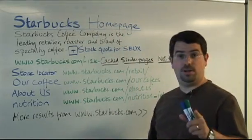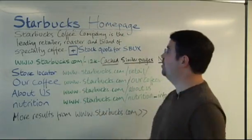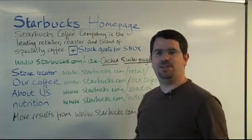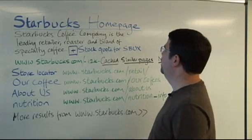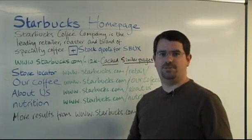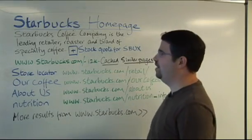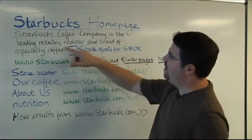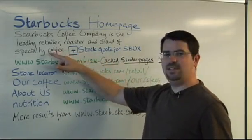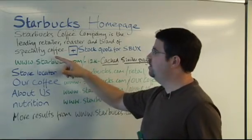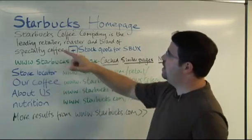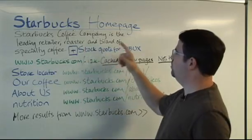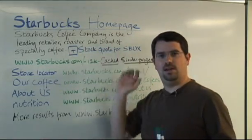Just a quick bit of SEO advice for Starbucks — 'homepage,' a few people might search for that. But I might say something like 'Starbucks coffee' because people are a little more likely to search for that. Anyway, enough of the free advice for Starbucks. The next thing that you see is something we call the snippet. In this case, it says 'Starbucks coffee company is the leading retailer, roaster, and brand of specialty coffee,' and on like that.